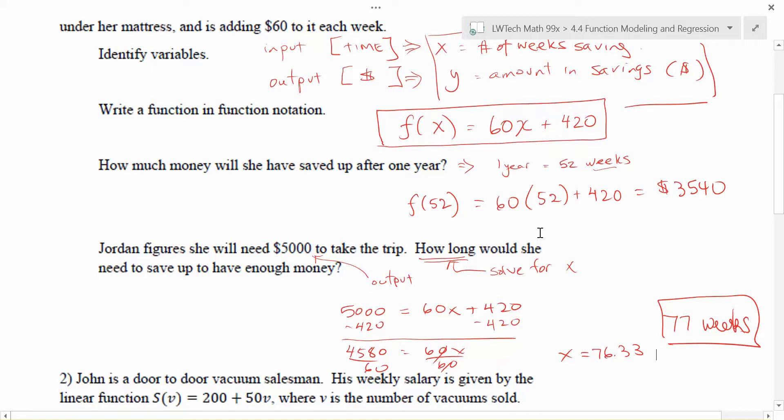Why 77? If she only saved for 76, she wouldn't quite have enough money yet. So sometimes in these examples, it's a good idea to go ahead and round up because it makes more sense from a problem perspective.